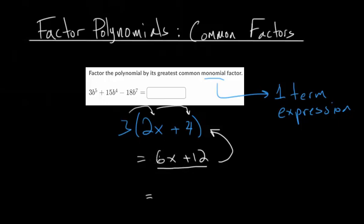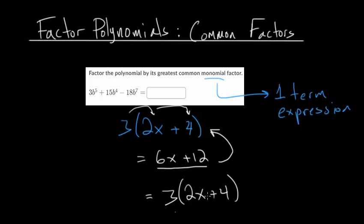Since 3 divides into both terms, when you factor out the 3, we're essentially dividing each term by 3. So 6x divided by 3 is 2x, and 12 divided by 3 is 4, and that's how you get back to what we started with: 3(2x + 4). You can always check by redistributing — if you get back what you started with, you know you're on the right track.